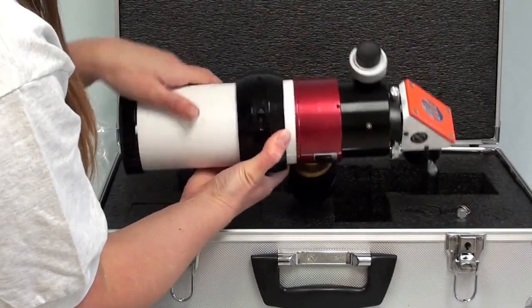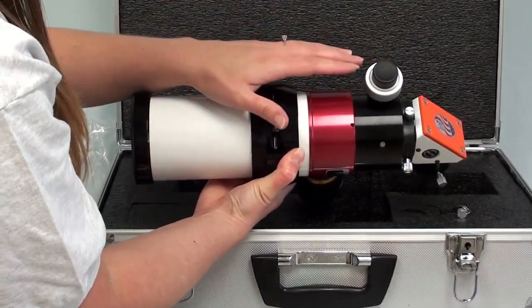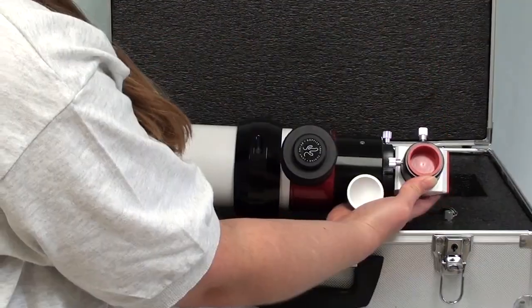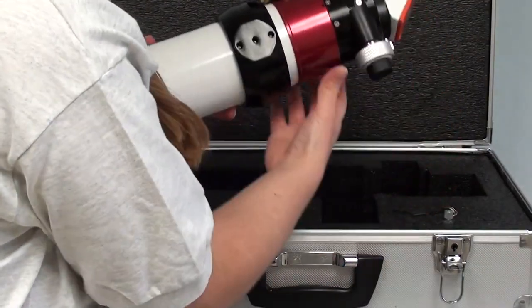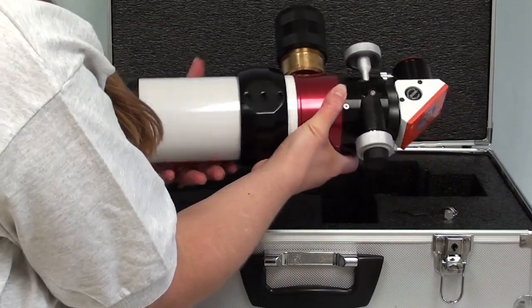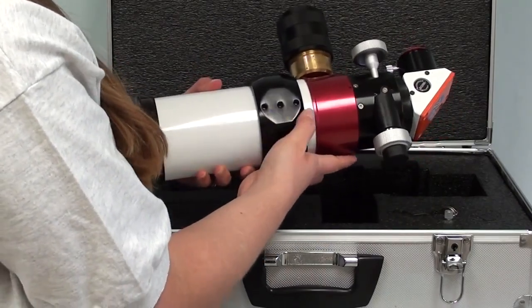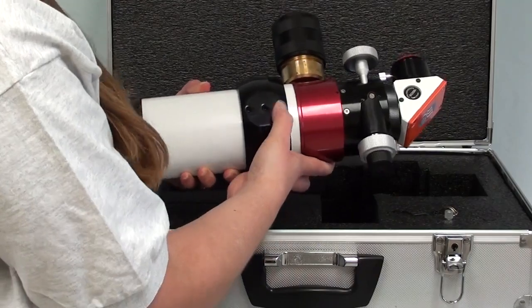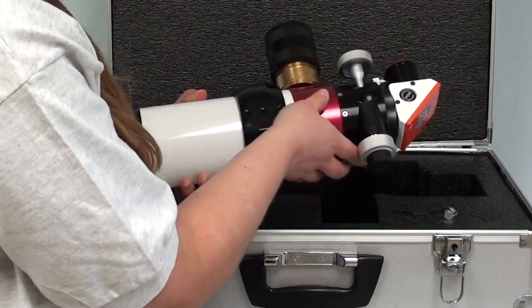You'll find here you have your fine focus and coarse focus for the telescope. Also on your telescope, you will have received a clamshell mounting ring. You'll notice there's three holes. These are all tapped for quarter-twenty threading, so it will be compatible with most dovetails that you would be using.